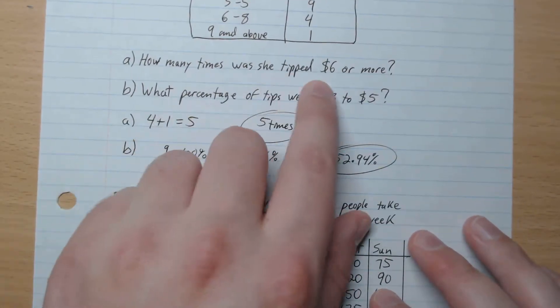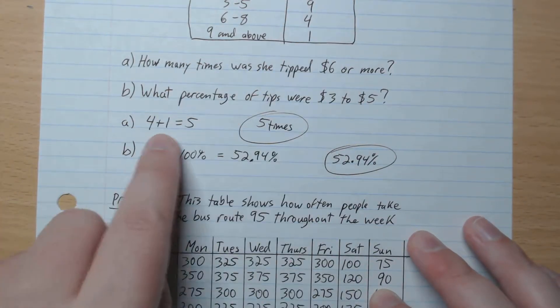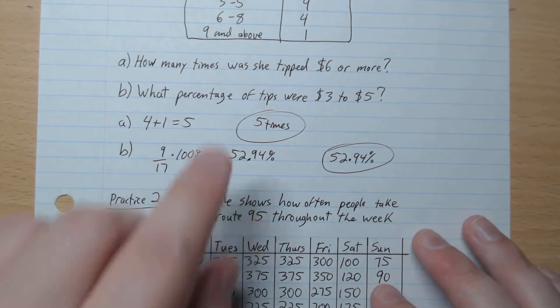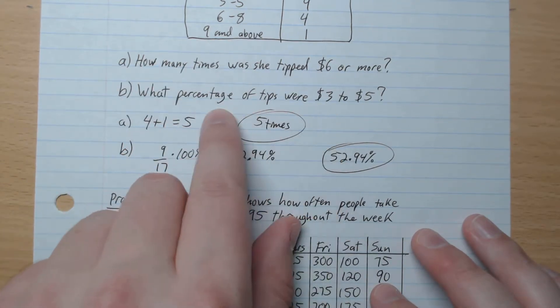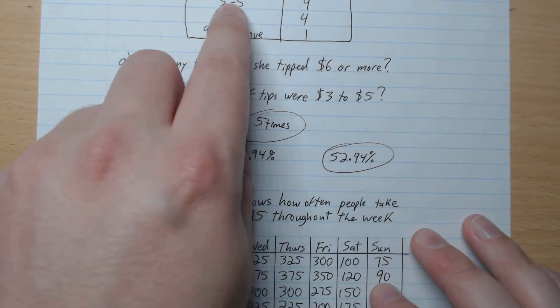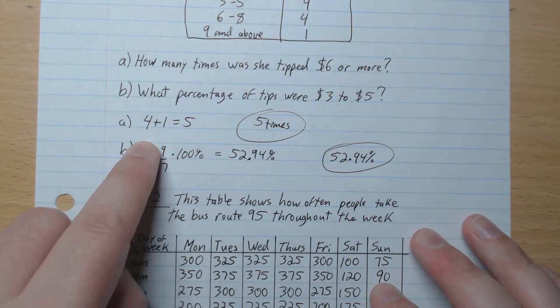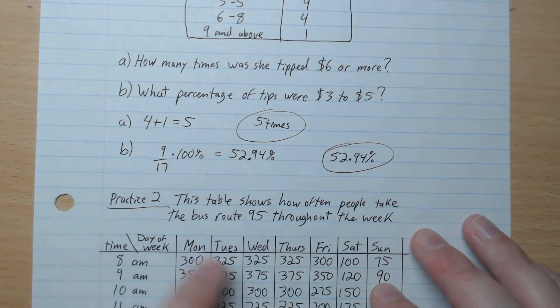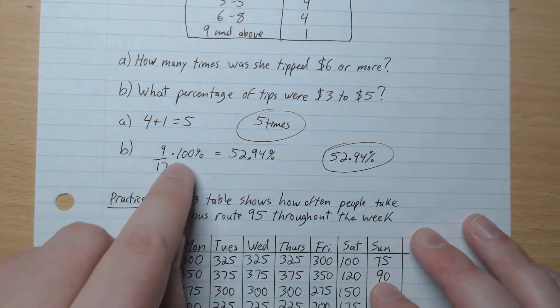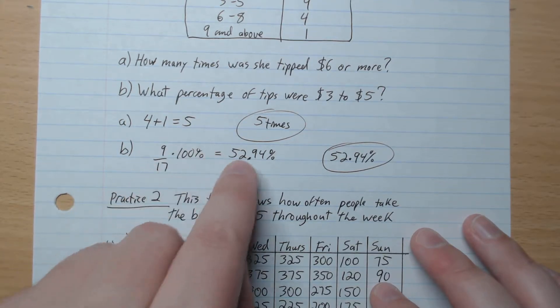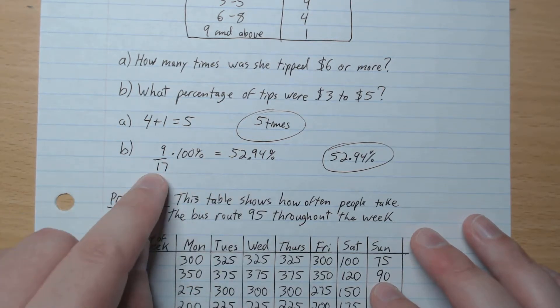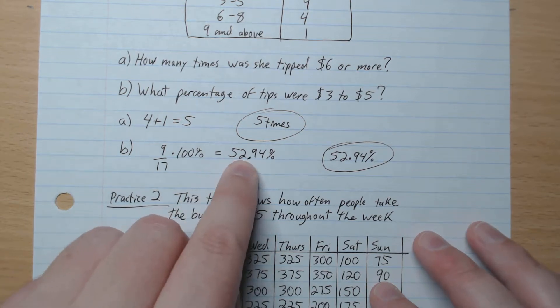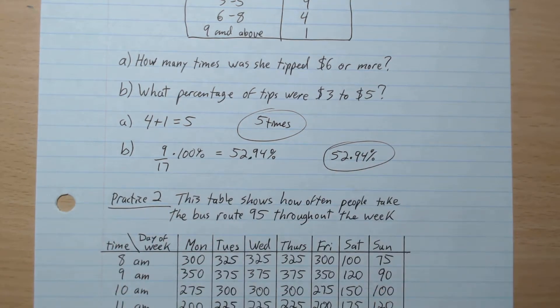Okay, so how many times 6 or more? So we have 4 plus 1, 5. 5 times. B. What percentage of tips were $3 to $5? So $3 to $5 was 9. So it's 9 out of the total amount of 17. And we saw in our percentage video that this is how we convert to percent. So 9 out of 17 is 52.94% like that.